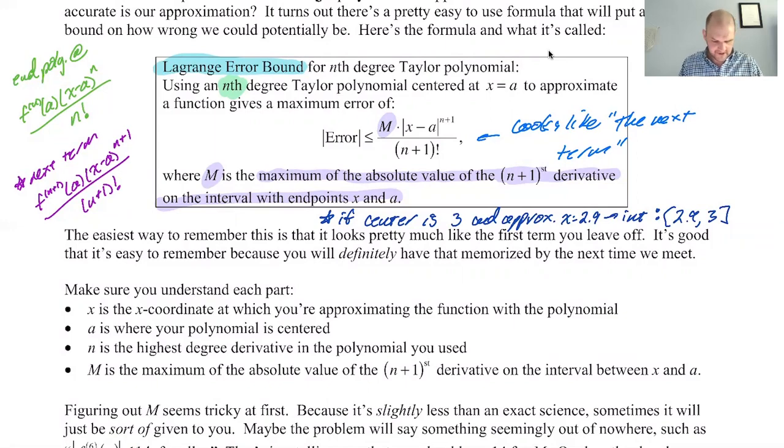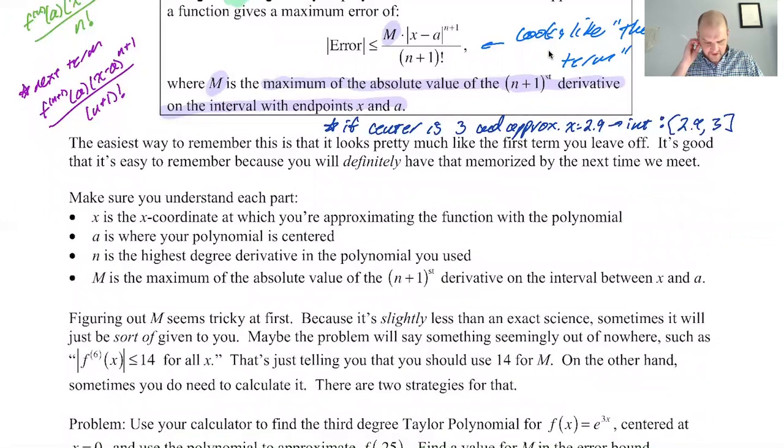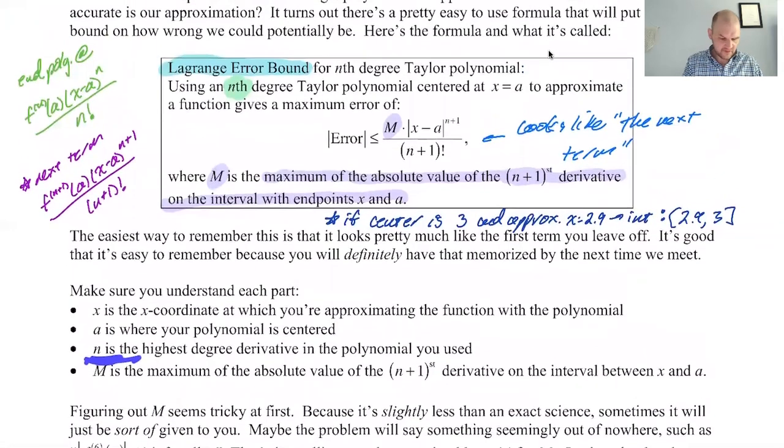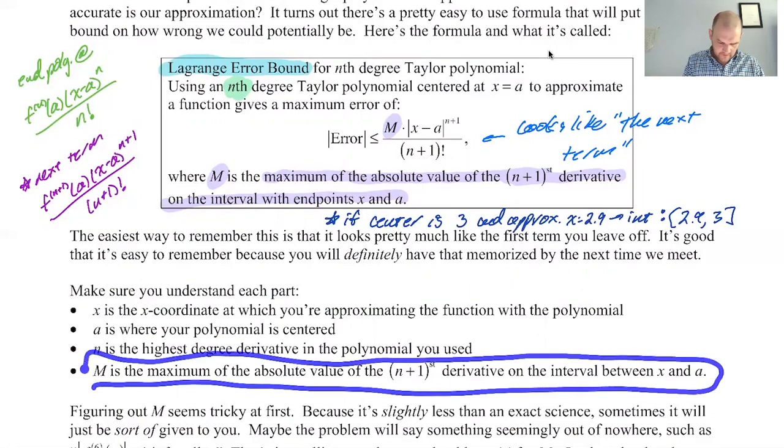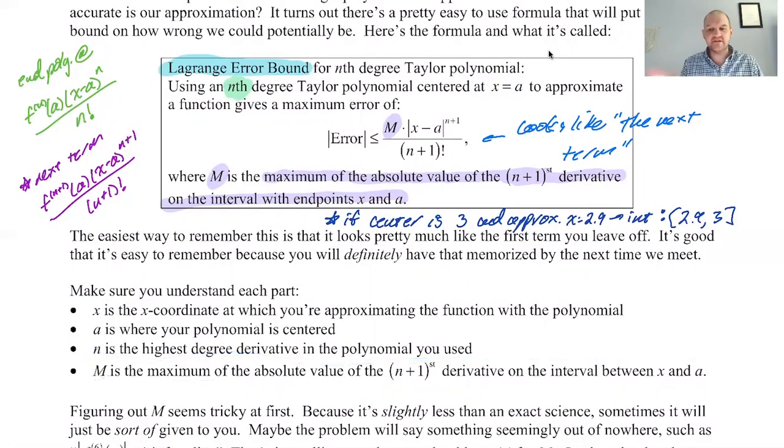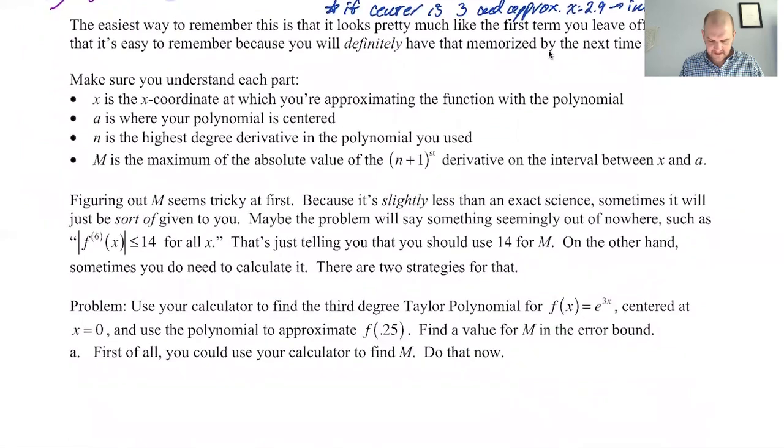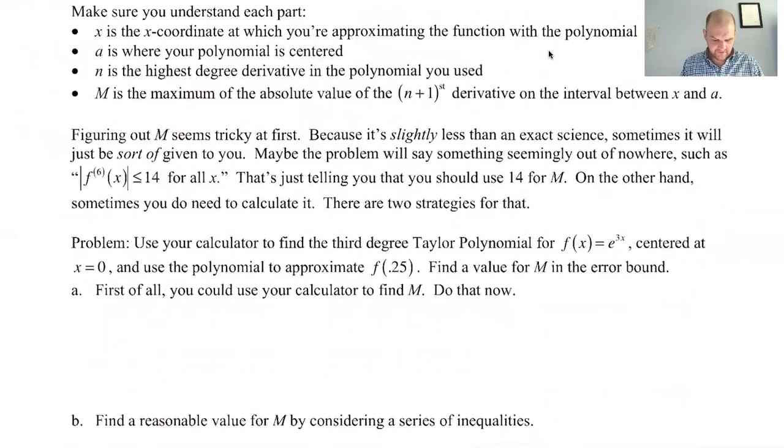So let's see what else this has. x is definitely the coordinate you're approximating the function. In my dark blue here, x is 2.9. a is the center. n is the highest degree derivative used in the polynomial. What did we use to get the last term of our polynomial? Was it the fifth derivative? Then n is five. So then we have to look at the five plus one, the sixth derivative. And then m is the tricky part. It's the maximum of the absolute value of the n plus first derivative on the interval between x and a. It's not that bad to do.